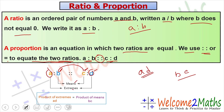Now remember this important property: in a proportion a is to b as c is to d, we always get that a × d equals b × c. That is, the product of the extremes equals the product of the means.